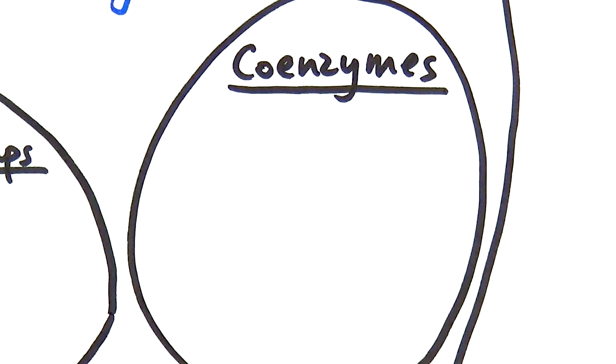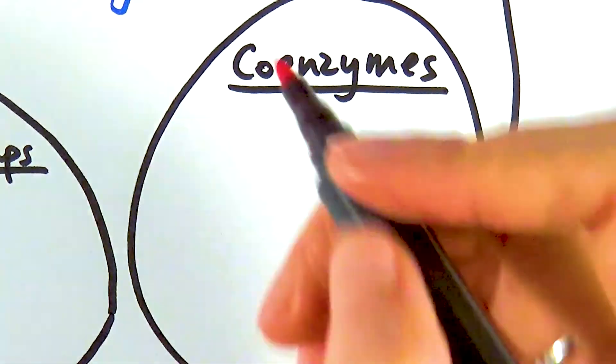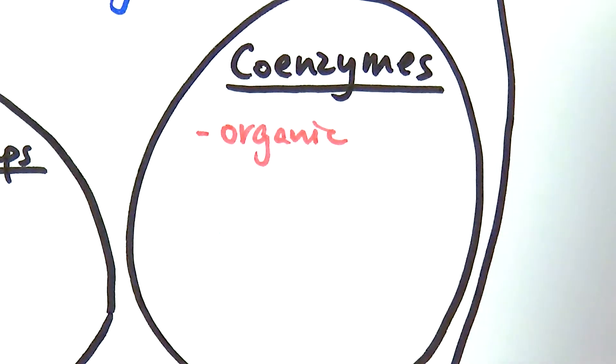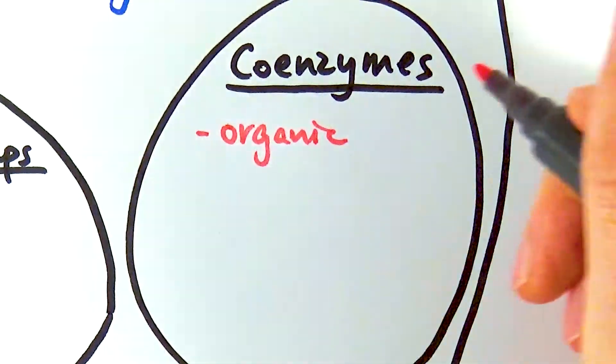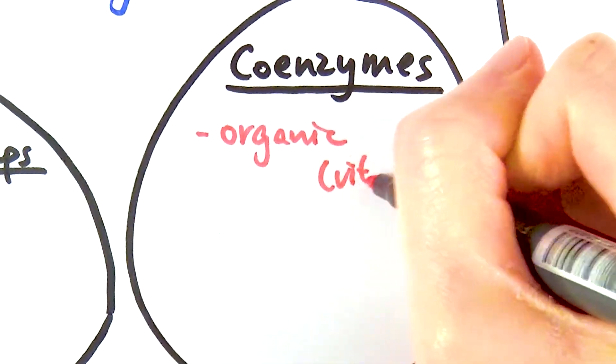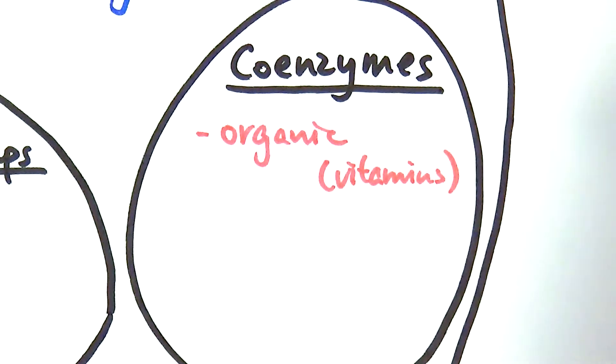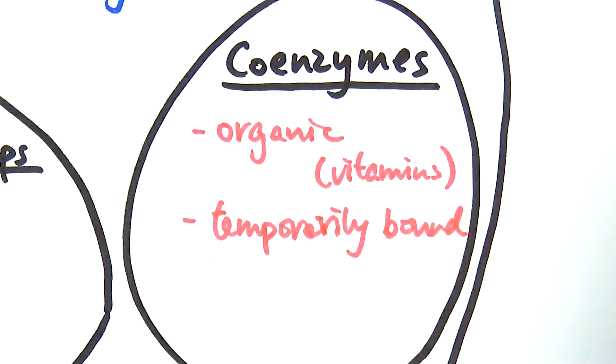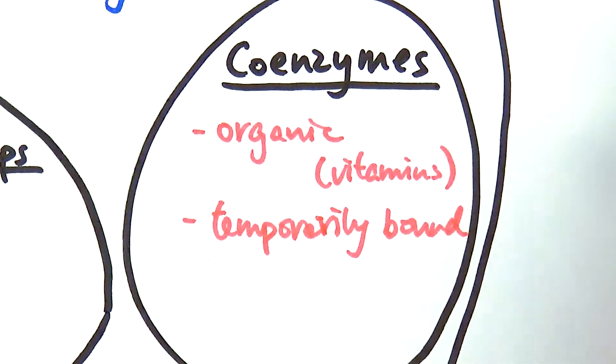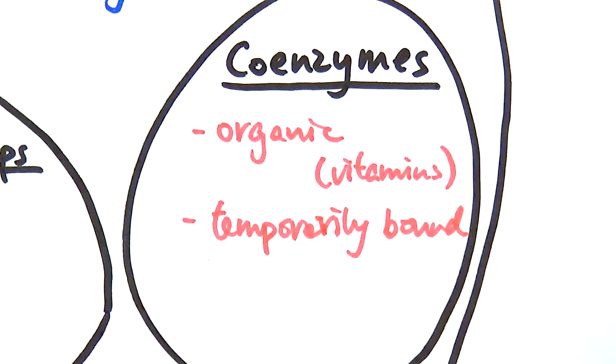Now within that genre, we have a specific type of cofactors called coenzymes. As the name implies, it's coenzymes. Enzyme is kind of referring to the biological aspect to it. Coenzymes are basically organic cofactors, and they're usually made from vitamins or derived from vitamins. Things like vitamin A, B, C, or D, etc. One similarity that they have is that both coenzymes and cofactors are temporarily bound only. They could leave the protein or the enzyme after a while.